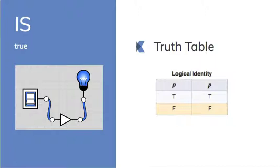So when the switch is on, the light bulb is on. When it's true, it's true. When it's false, it's false.